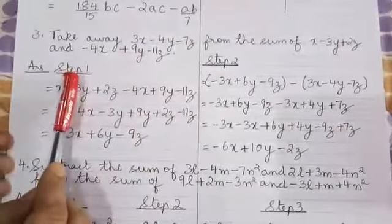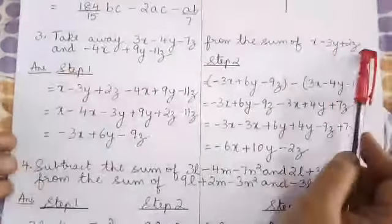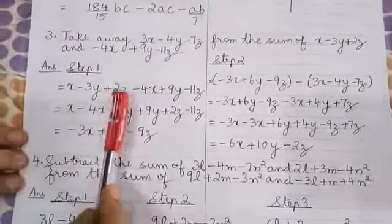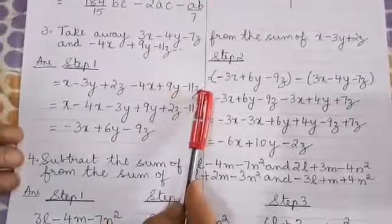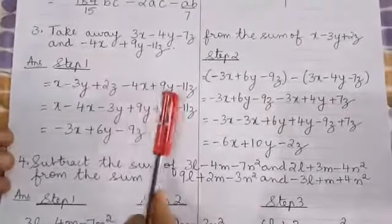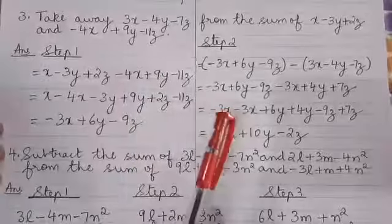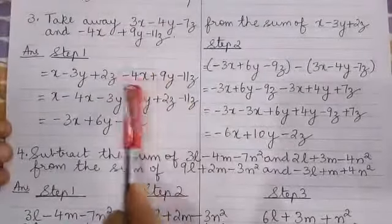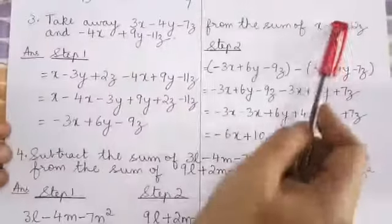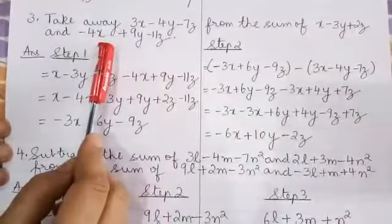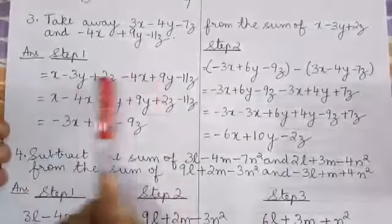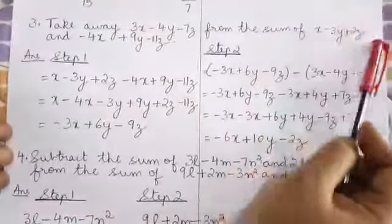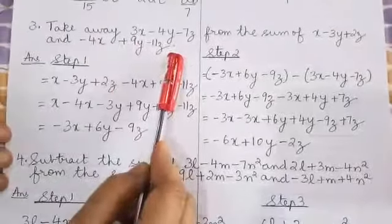Step 1: write out this expression — the three terms in this expression and the terms in this expression. When we are adding two or more expressions, the terms have the same sign. There is no change in the signs, so you don't have to enclose these two expressions in a bracket. You can straight away write the first step with the terms in the two expressions as they are with their signs.